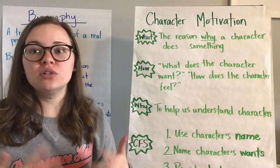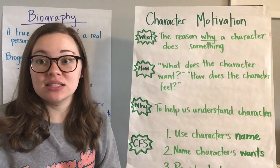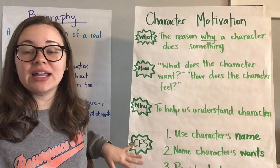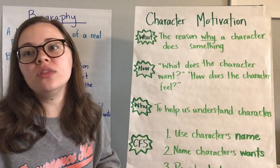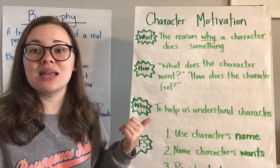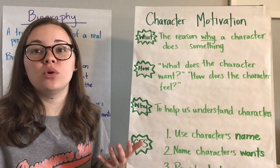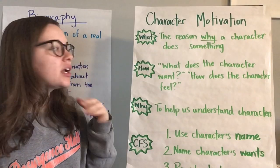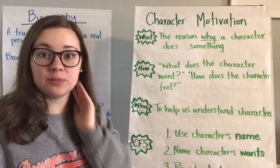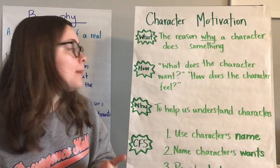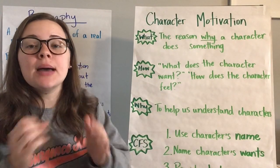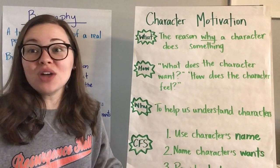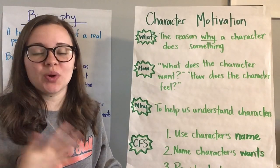Before we get going, there are a few different things we need to discuss. First, we're going to be continuing to work on character motivation. Even though this biography is about a real person, we still take the same steps we would to figure out the motivation of a character from a made-up story. We're going to figure out why people or characters did something by looking for what the characters want, giving text evidence, and thinking about what the character feels.